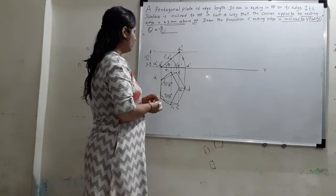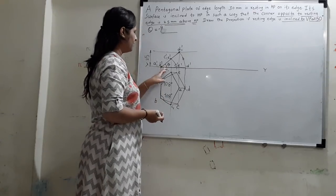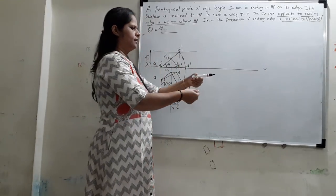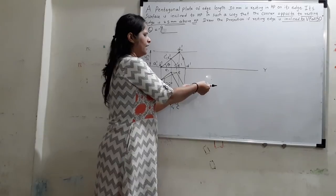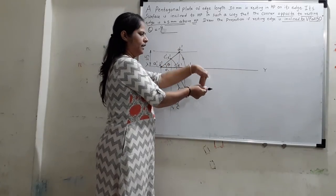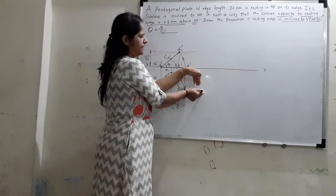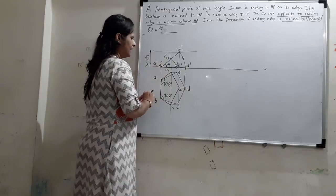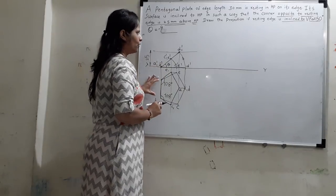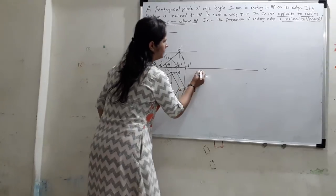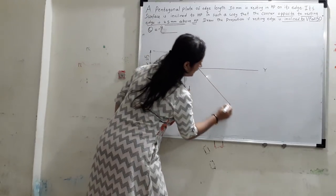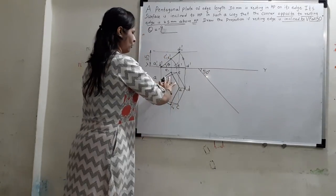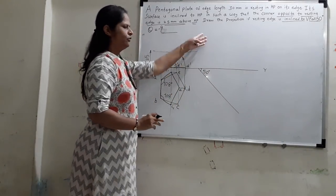The resting edge's angle with VP is observed in the top view. Right now the angle with VP is 90 degrees in the top view. If we want to make it 50 degrees, we simply draw a line inclined at 50 degrees and redraw the new polygon there to get the final answer. We locate point A somewhere with enough space so the entire polygon can fit.